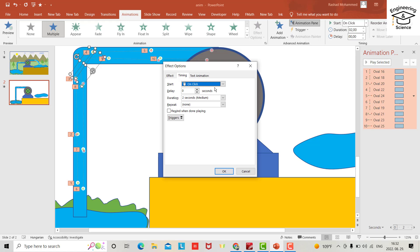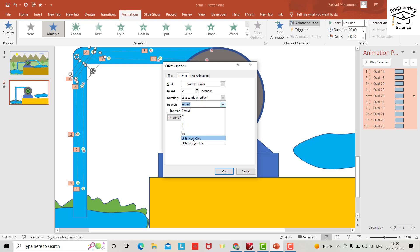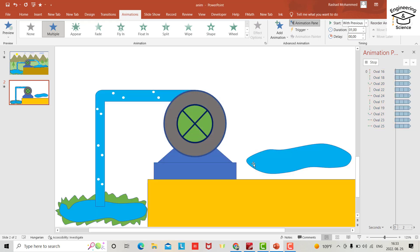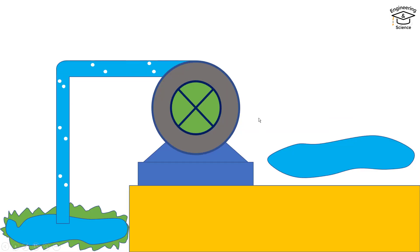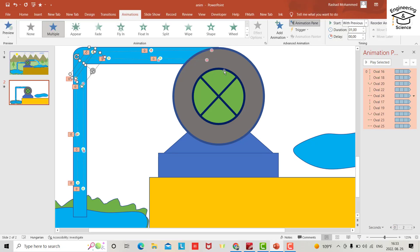From Effect, make it smooth and close. Under Timing, set Start to With Previous, repeat Until End, and duration to one second. Let's see the animation.